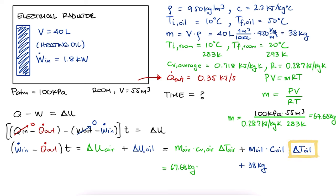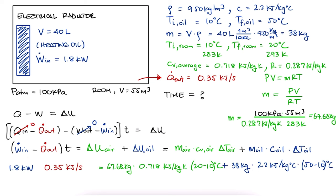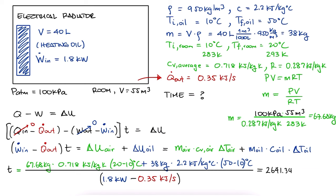The change in temperature for the oil will be 50 minus 10, and the change in temperature for the air will be 20 minus 10. We substitute the rest of the values, we solve for the time, and we find that t is equal to roughly 44 minutes. And done!